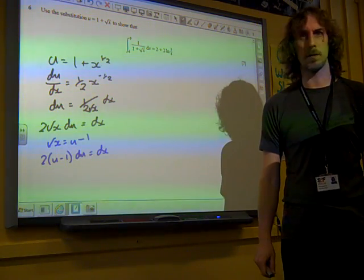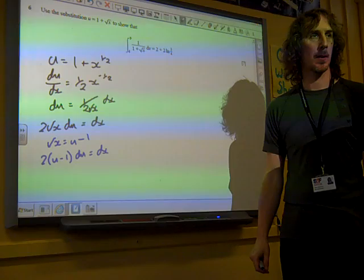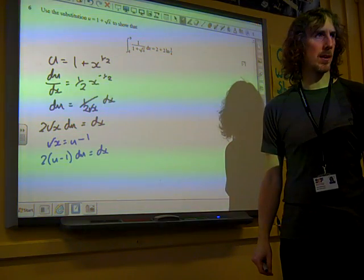So this is 2 lots of u minus 1 du is equal to dx. Now, that took quite a bit of messing around to get to that point.